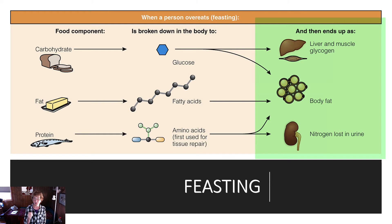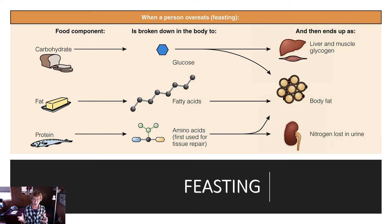Excess fat will also be stored in the adipose cells as fat. When you consume excess protein, after proteins have been broken down into amino acids and used for their functions, the nitrogen will get excreted in the urine, and those excess carbons will form fat. Any macronutrient consumed in excess of what the body needs will be stored in the adipose cells as fat.